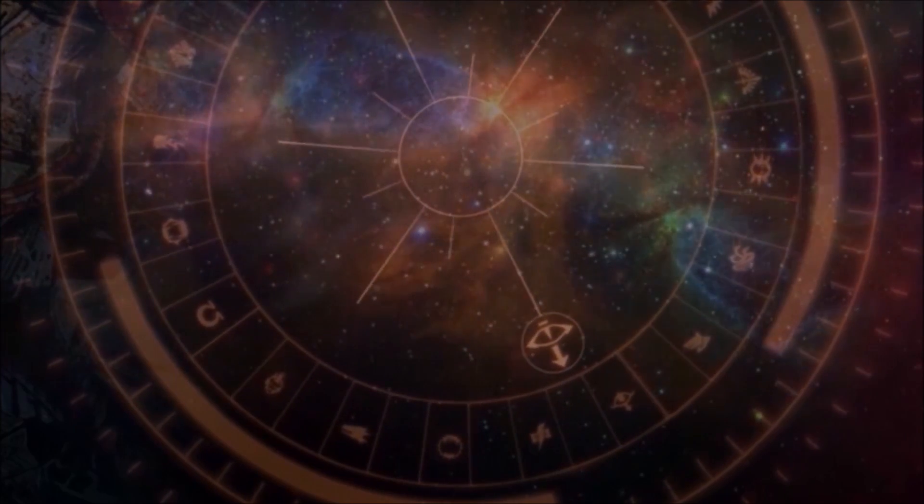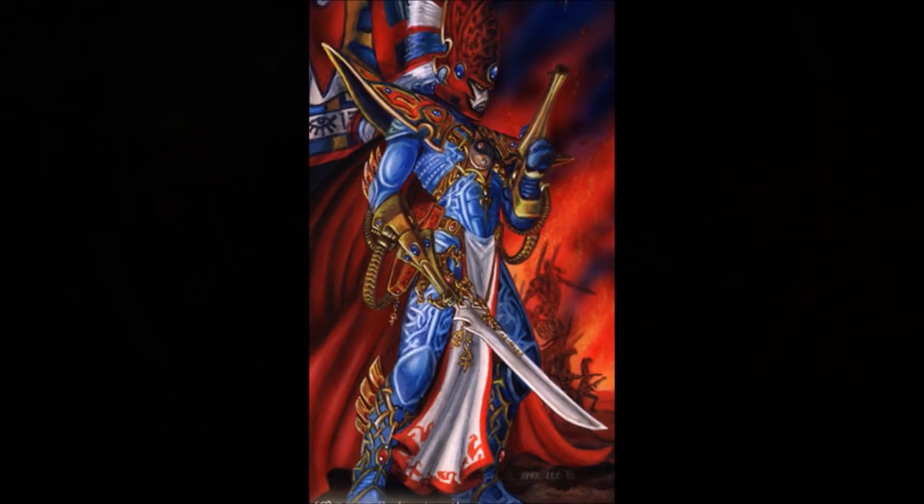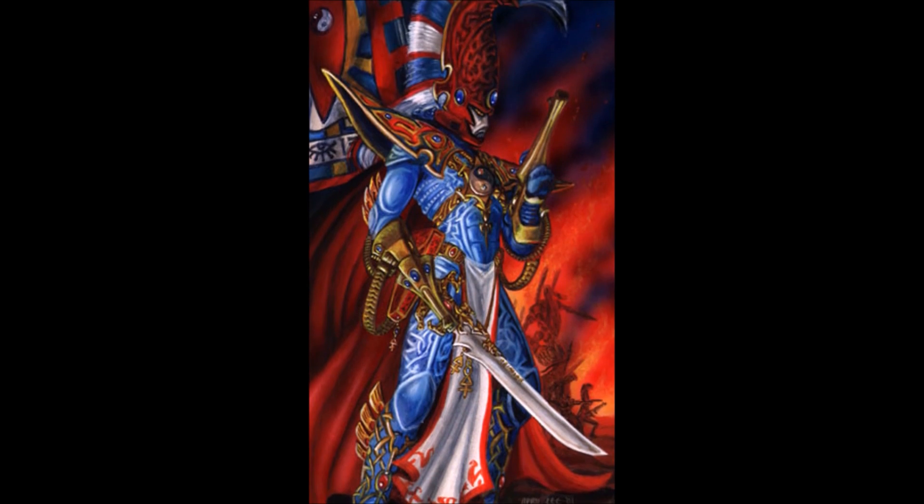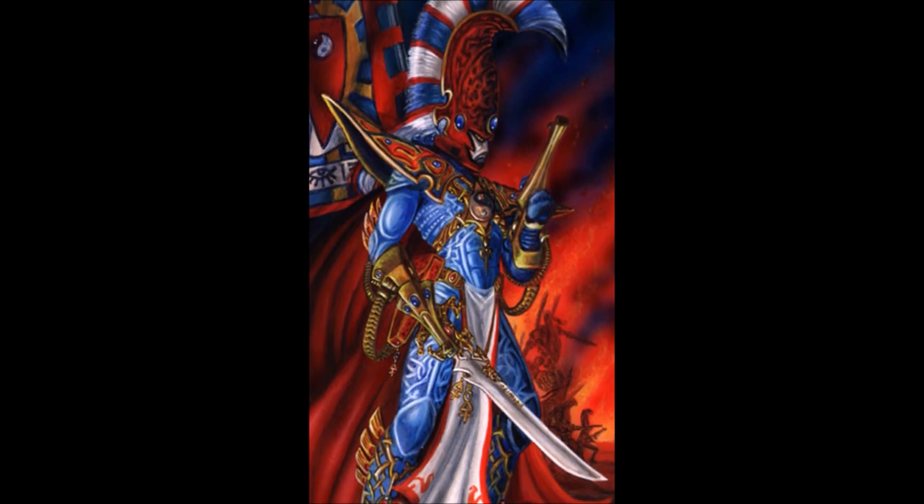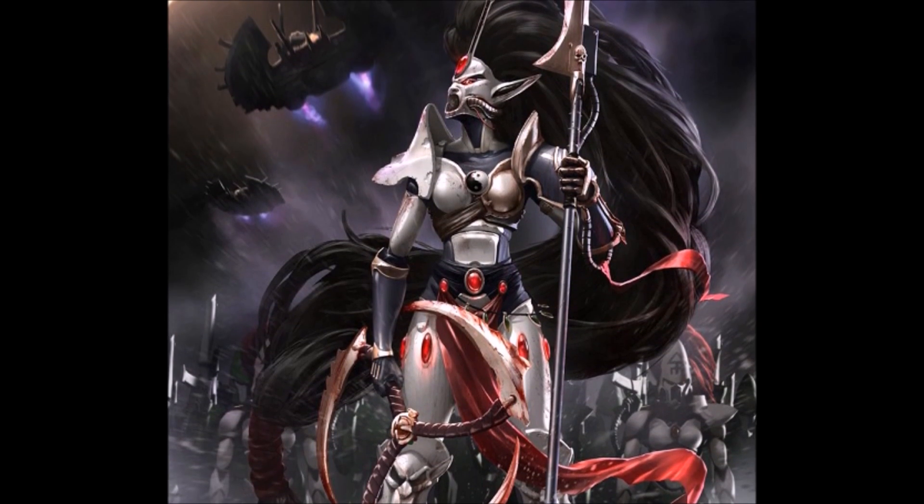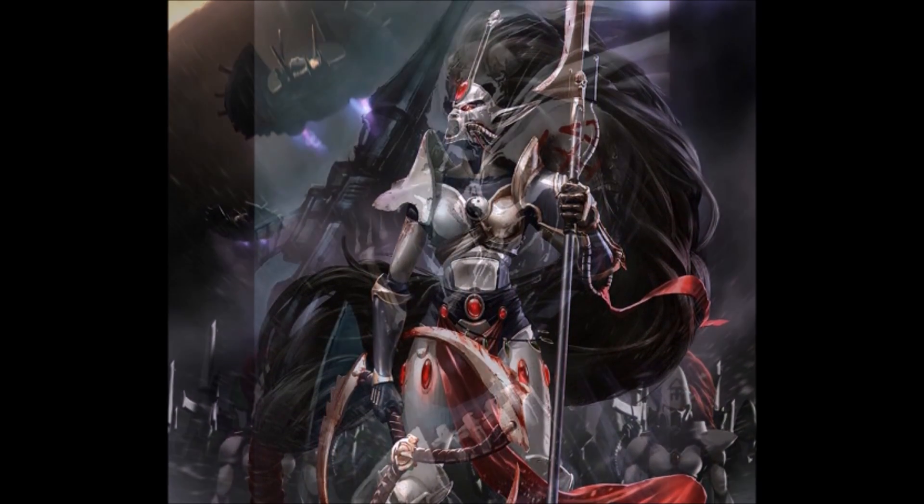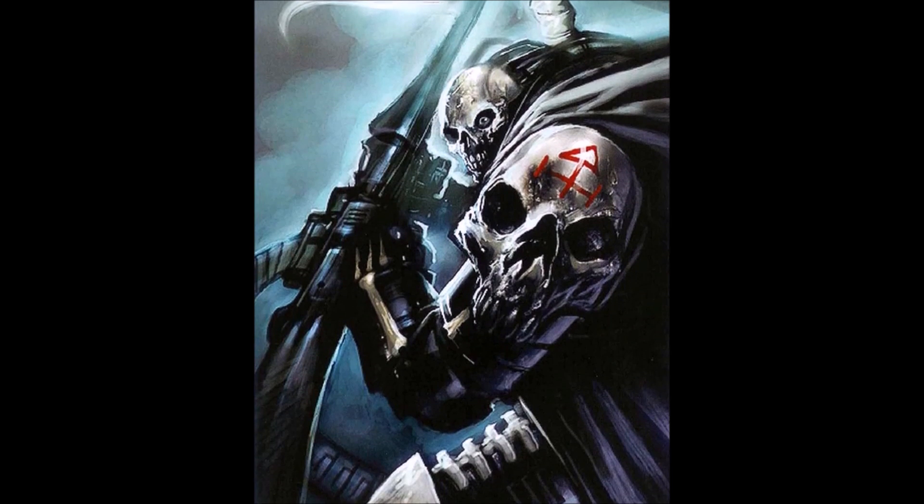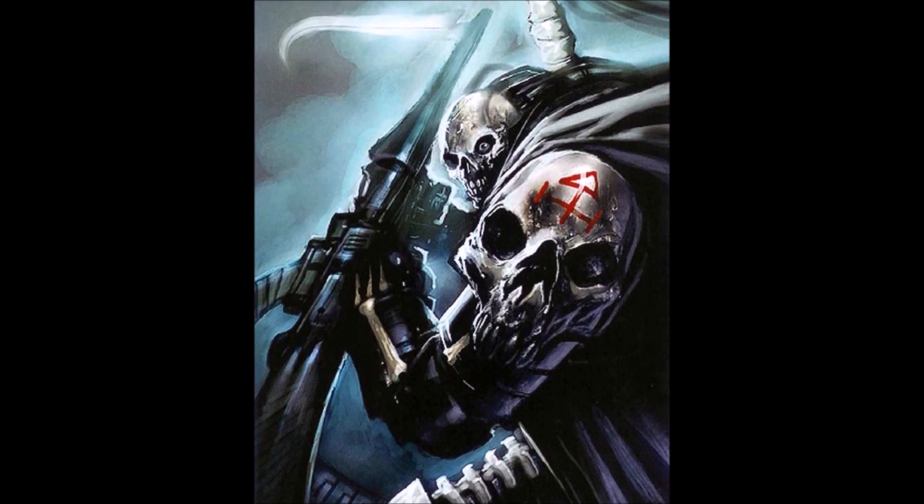The known Phoenix Lords are as follows. Asurman, the Hand of Asuryan, the founder of the Dire Avengers Shrine. Jain Zar, the Storm of Silence, founder of the Howling Banshees. Maugan Ra, the Harvester of Souls, first of the Dark Reapers.